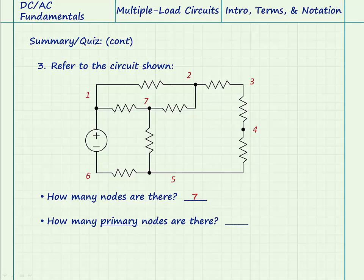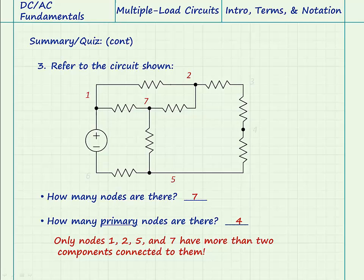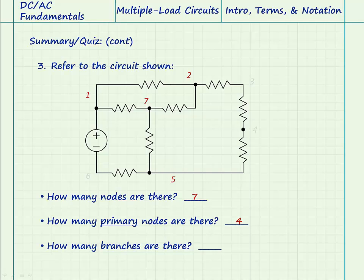How many primary nodes does this circuit have? There are four primary nodes. Only nodes one, two, five, and seven have more than two components connected to them.